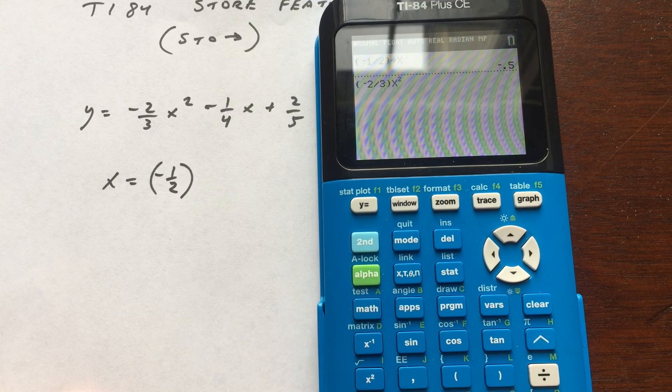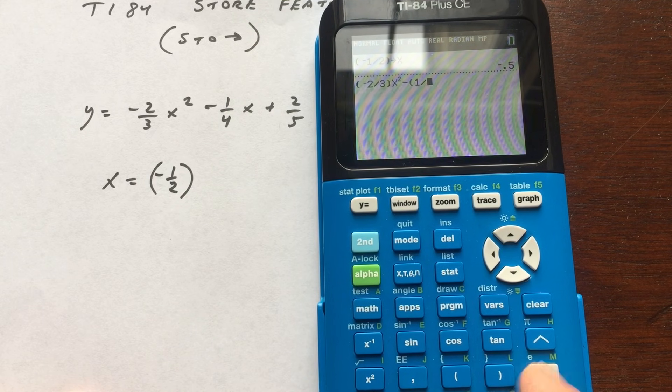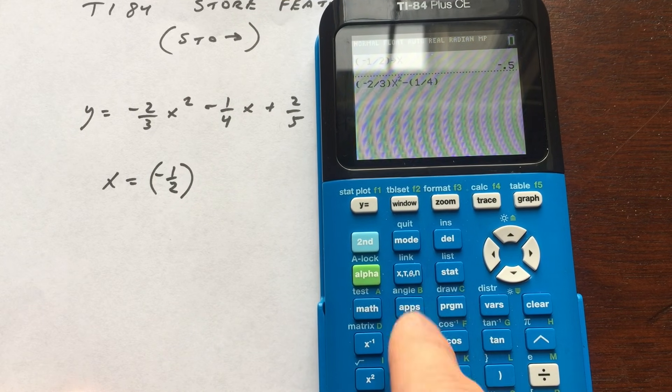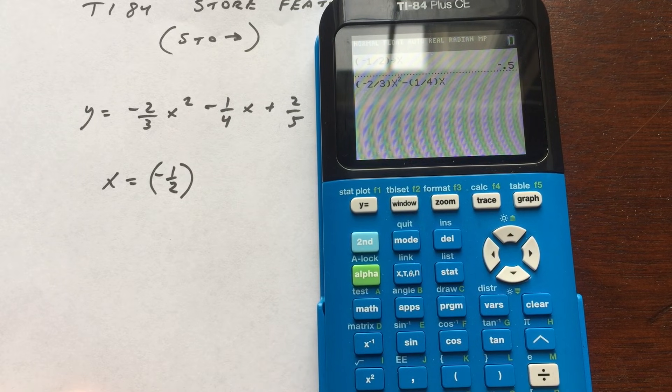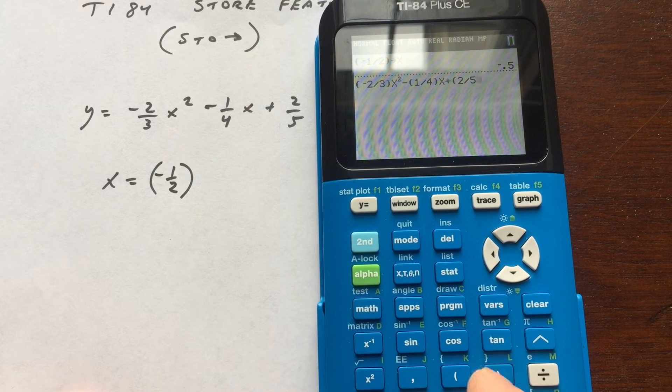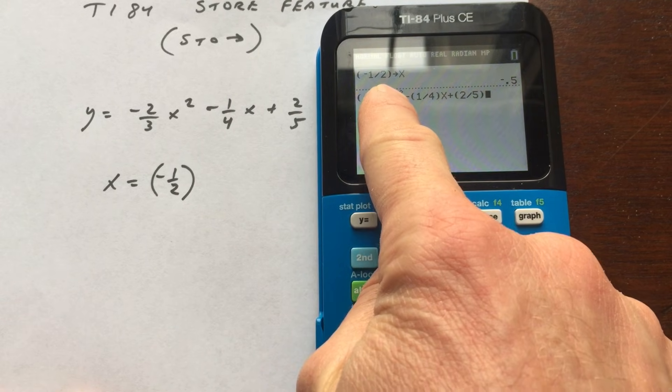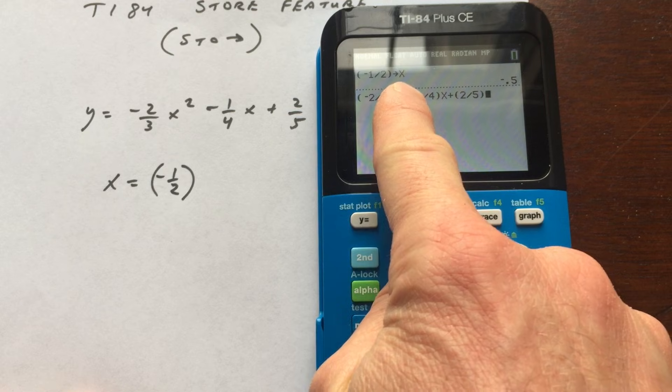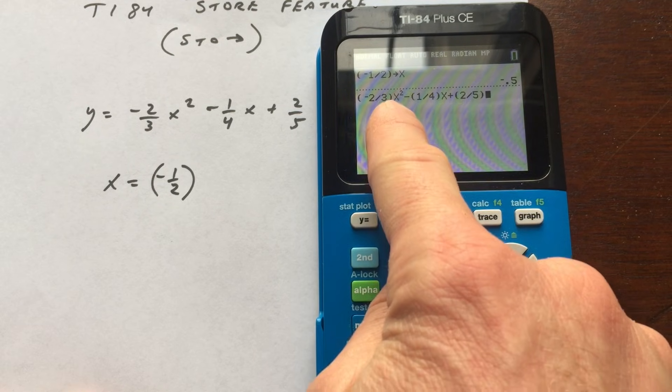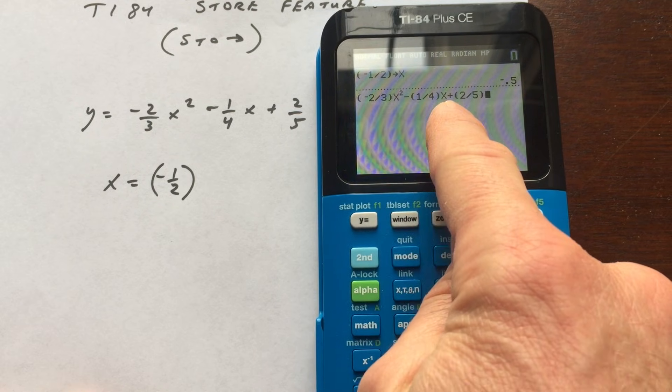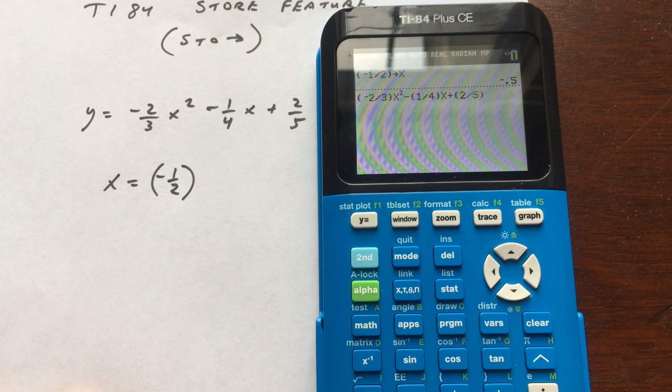Minus, and I'm putting the fractions in parentheses as you can see, one-fourth X plus two-fifths. Again, I'm just going to put that in parentheses so it treats it like a group. So now what the calculator is going to do is it knows that negative one-half is stored under the value for X. So when I press enter, it's going to automatically go ahead and put that value in for X. So let's go ahead and see how that works out.